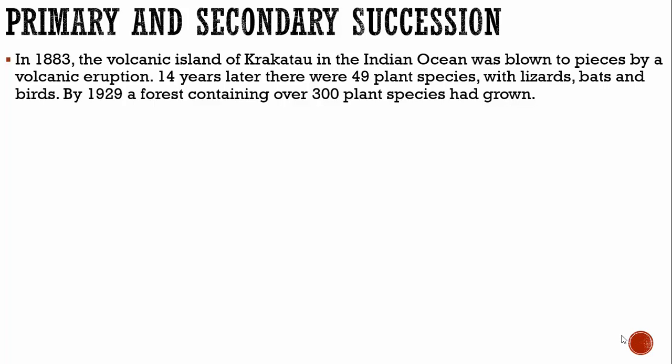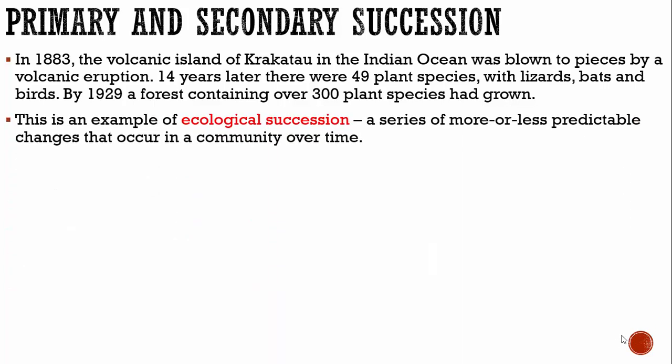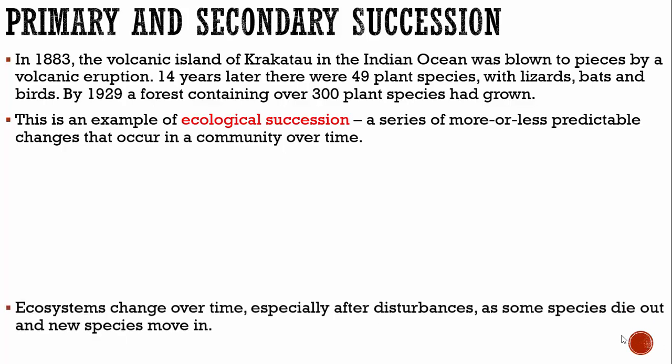Fourteen years later, there were 49 plant species with lizards, bats, and birds. By 1929, a forest containing over 300 plant species had grown. This is an example of ecological succession — a series of more or less predictable changes that occur in a community over time.